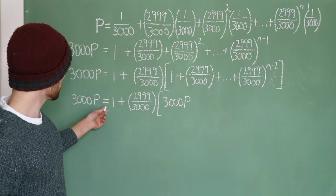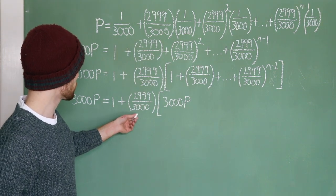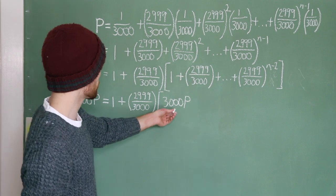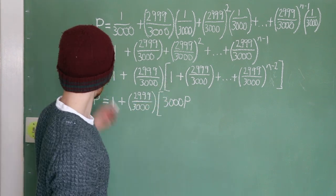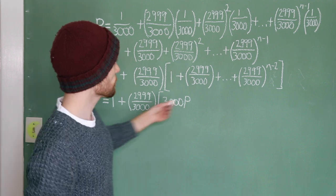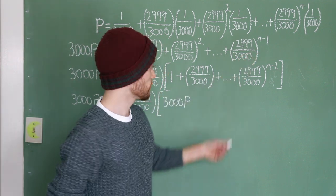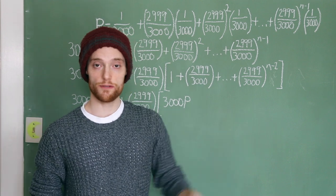3,000p equals 1 plus 2,999 over 3,000, and then we've substituted the 3,000p in here into the brackets. But, 3,000p gets us all the way to the n minus 1 term. We only want to go to the n minus 2 term, which is the term right before.